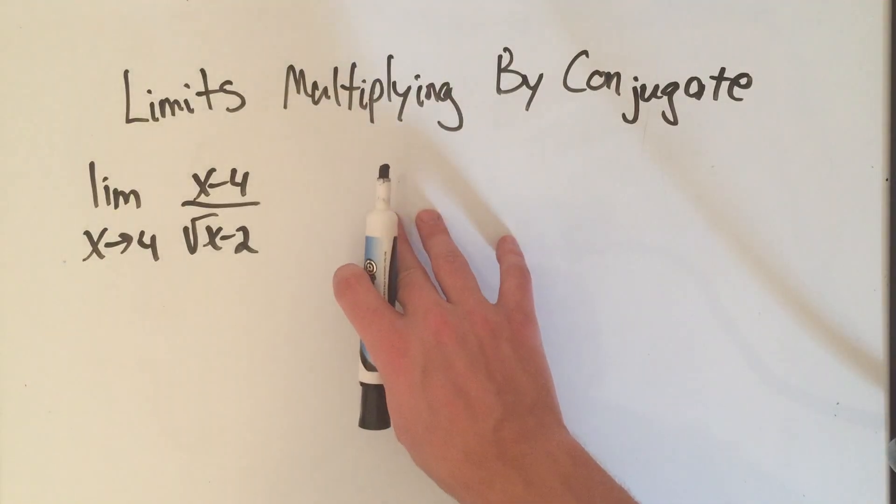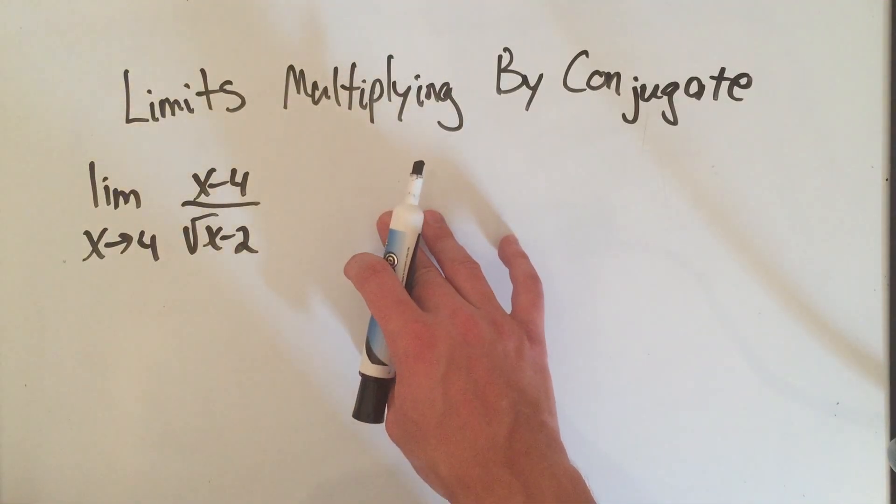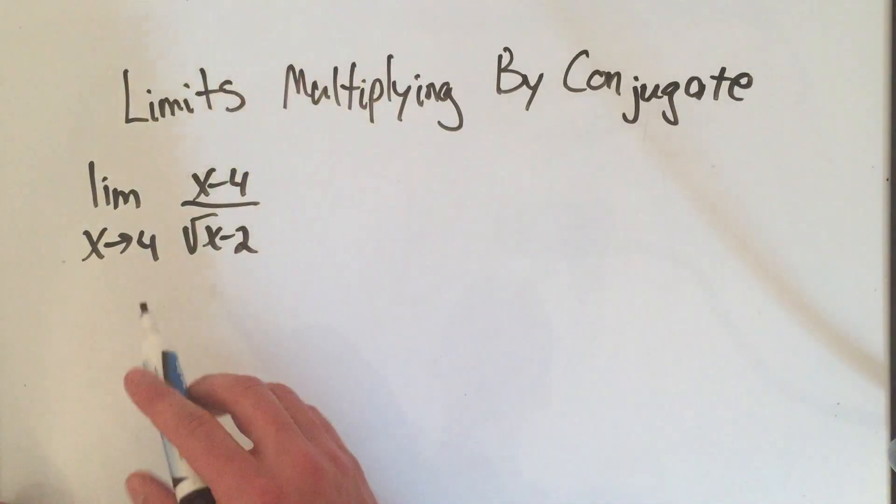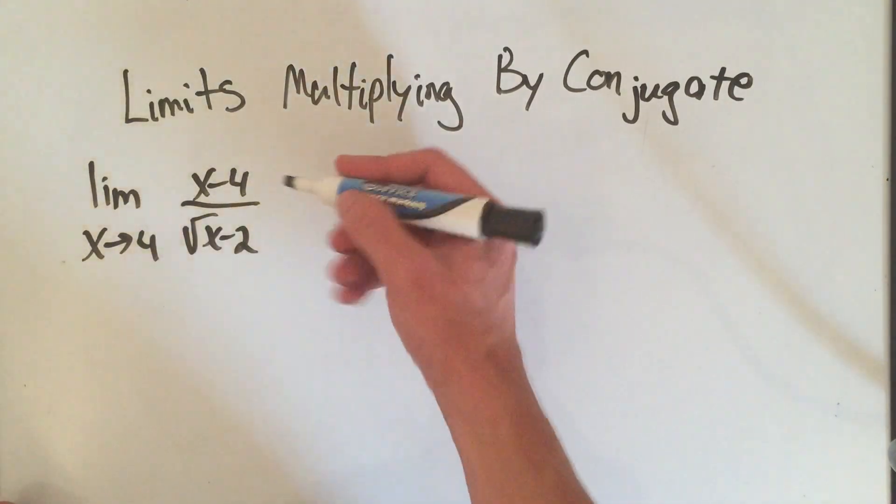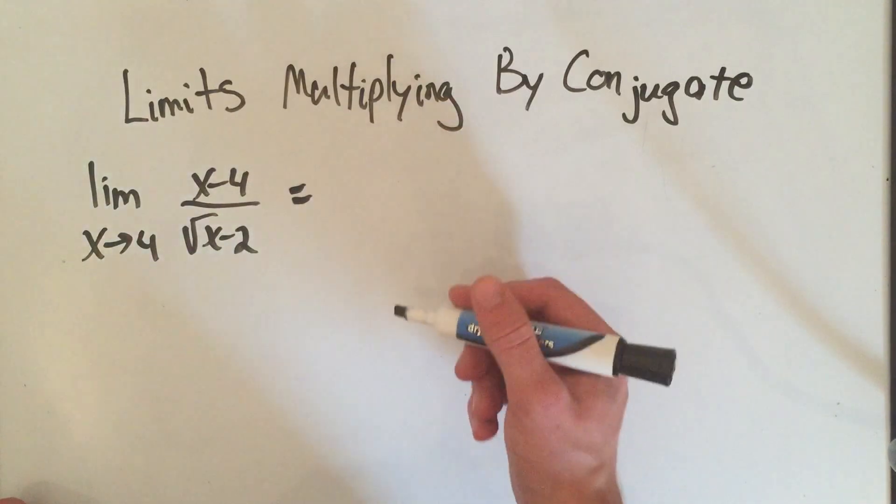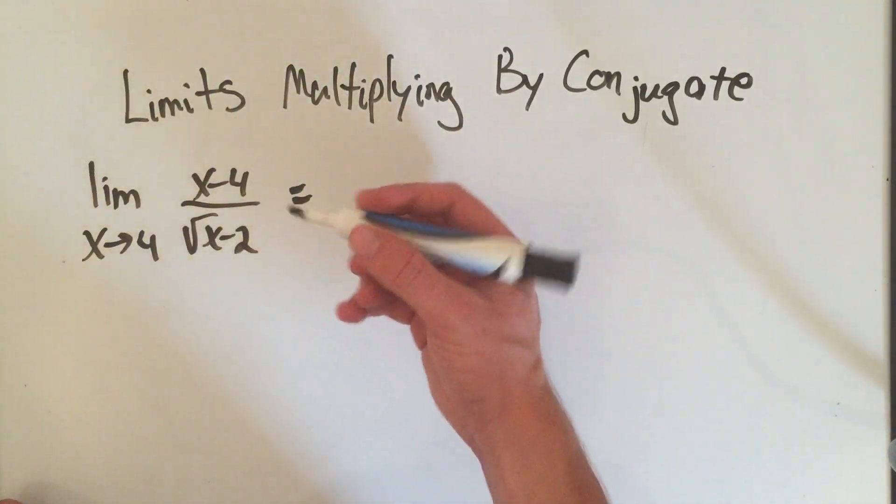We're going to do an example of limits multiplying by the conjugate. So we have to solve this limit, and let's do the first thing that I always recommend doing, which is just to plug in the number.